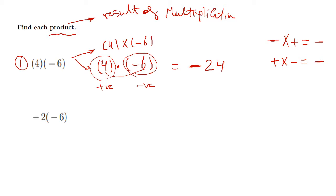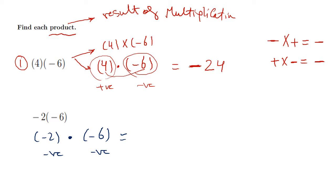If the first number is negative 2 and the second number is negative 6, both numbers are negative, so the answer is always positive. We multiply 2 by 6 directly, which equals 12. So negative times negative gives positive. And of course, positive multiplied by positive also gives a positive answer.